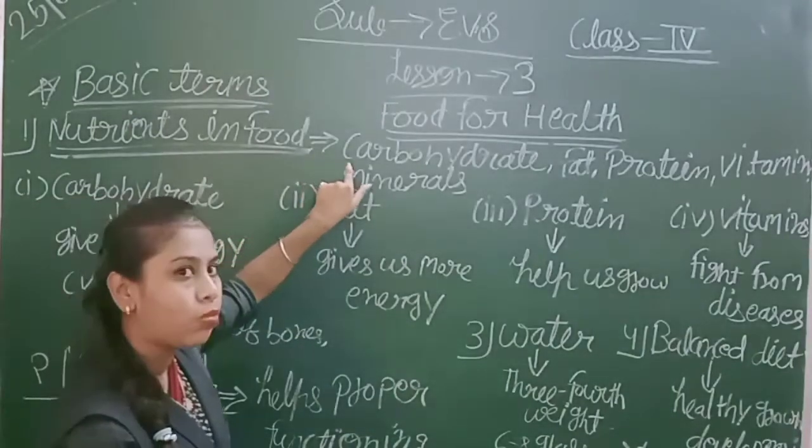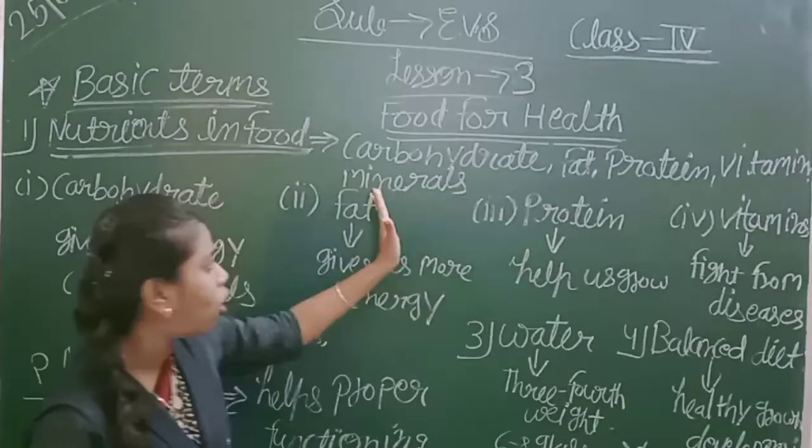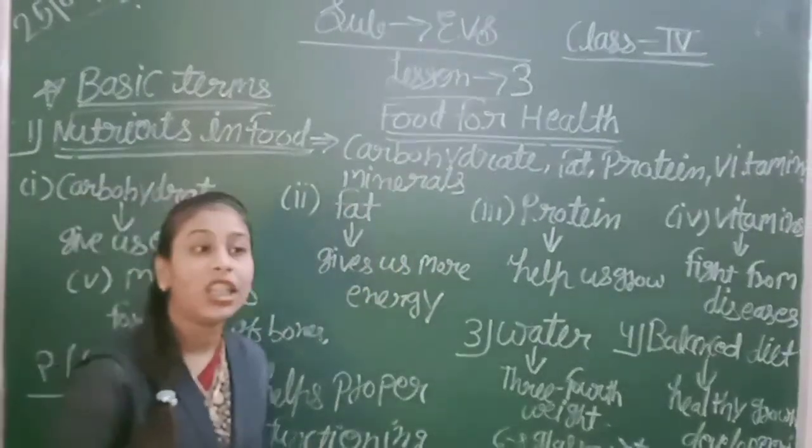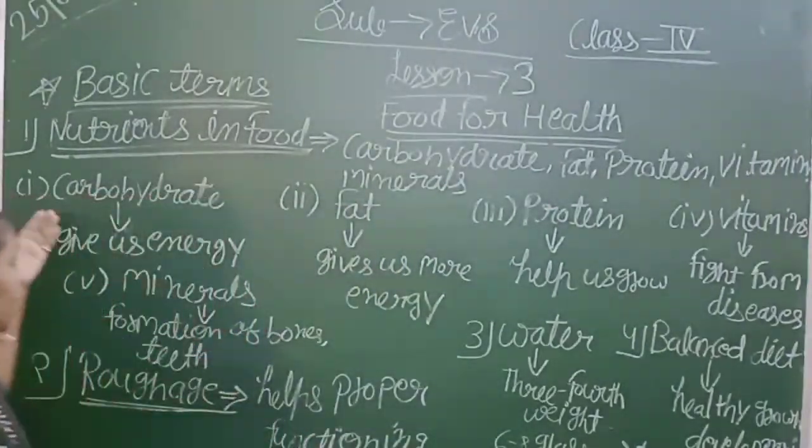We need carbohydrates, protein, vitamins, and minerals. How do they work? First is carbohydrates. What are carbohydrates?